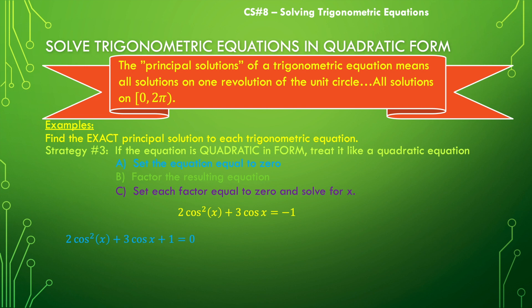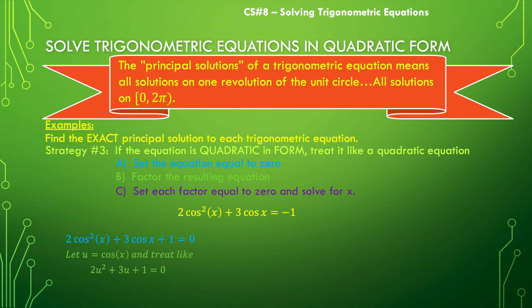Now we see that it's quadratic, but maybe it's harder to see it as a quadratic equation. So let's say u = cos(x). Then 2cos²(x) becomes 2u², and 3cos(x) becomes 3u. So we treat this like 2u² + 3u + 1 = 0. We can solve that quadratic by factoring: it factors to (2u + 1)(u + 1) = 0.